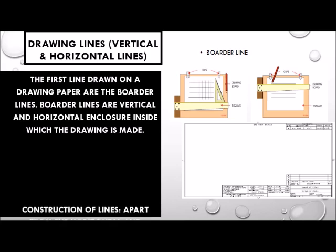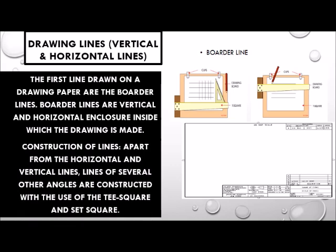Construction of lines. Apart from the horizontal and vertical lines, lines of several other angles are constructed with the use of a T-square and set square.